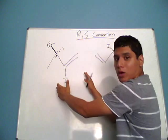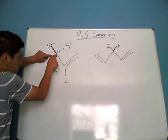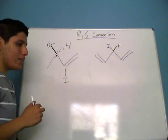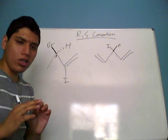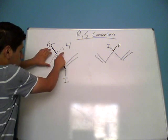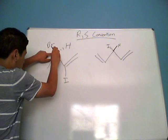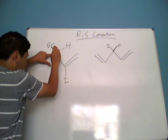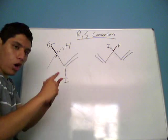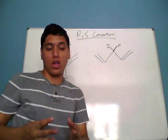We're going to talk about this compound that we discussed in the previous video, where we determined this was the only chiral center. So this is the only carbon atom that can be called R or S. Using the priority rules from the previous video — which of these substituents has the highest atomic number? This carbon is bonded to bromine, hydrogen, carbon, and carbon.